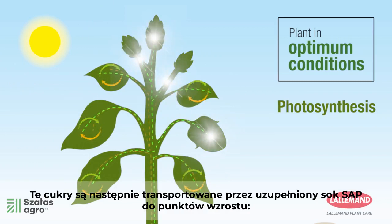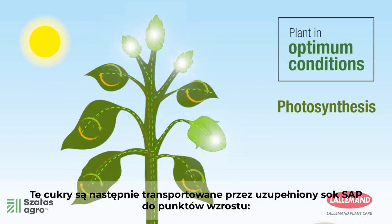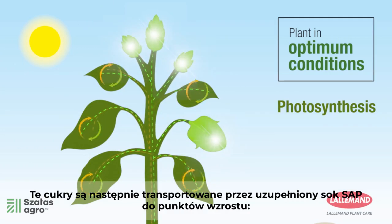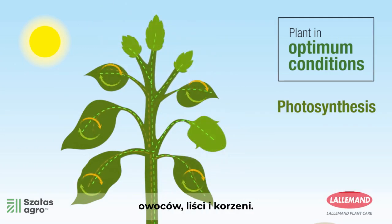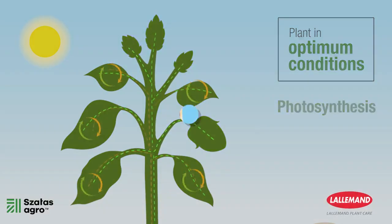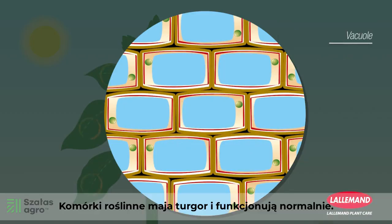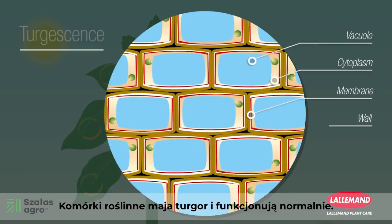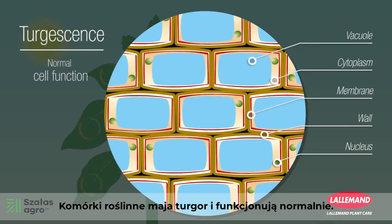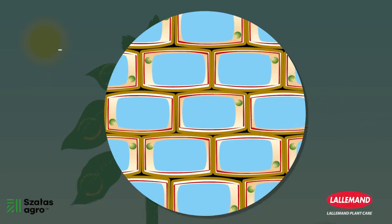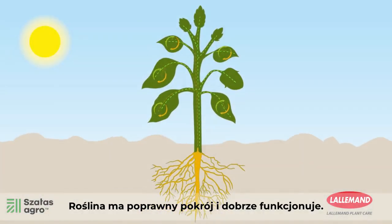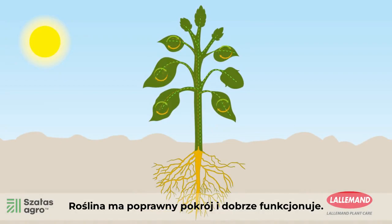These sugars are then transported by the elaborated sap to the growth sites: the fruits, the leaves, and the roots. The plant's cells are turgid and functioning normally. The plant has an upright habit.